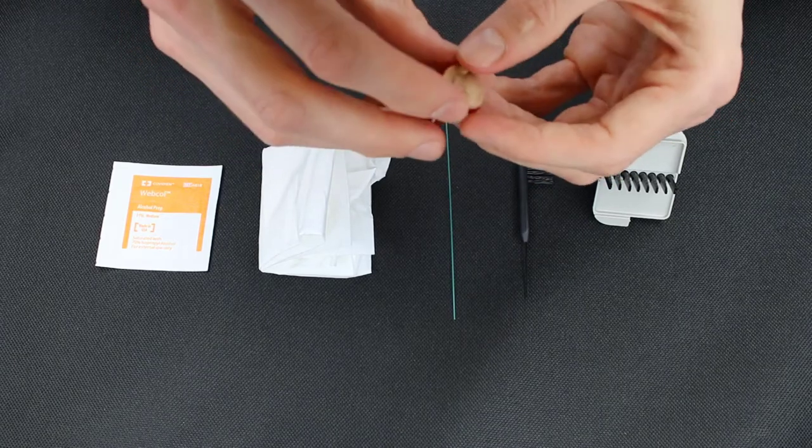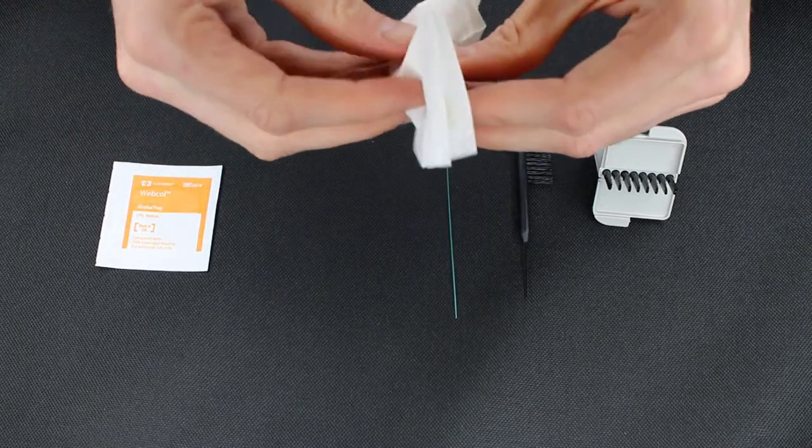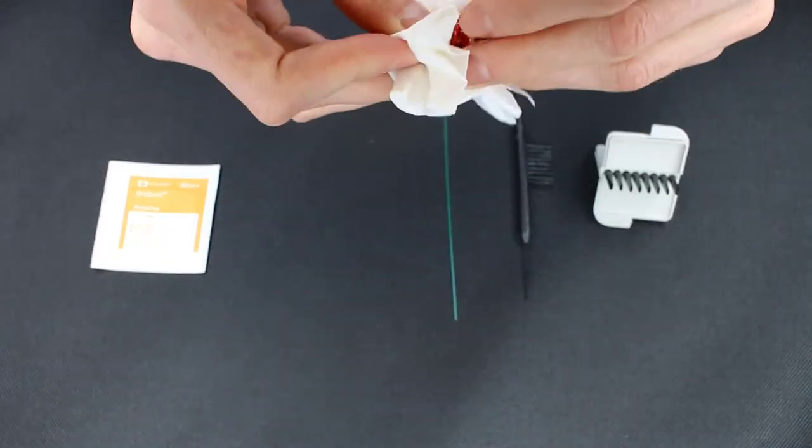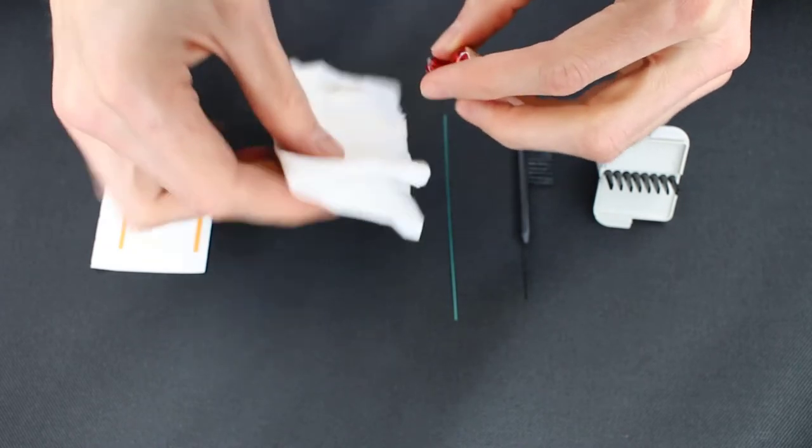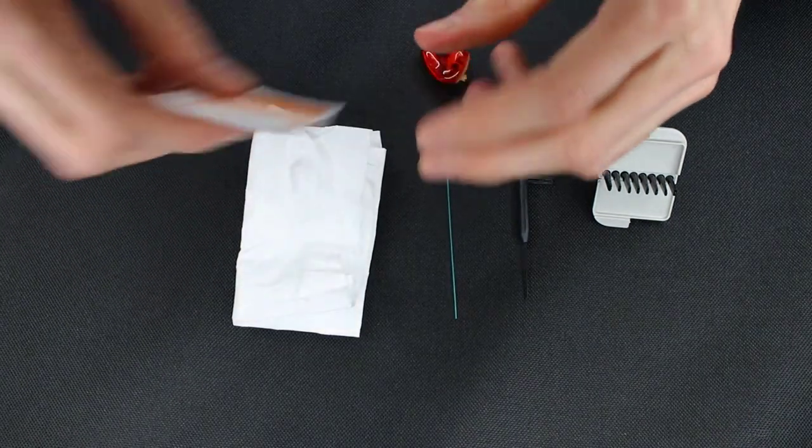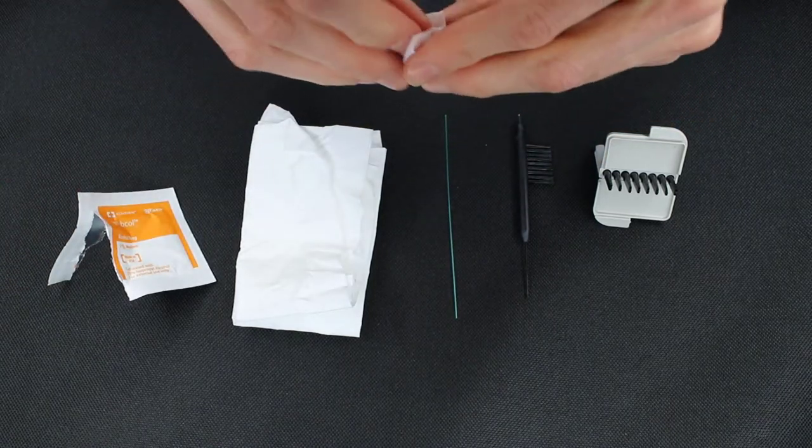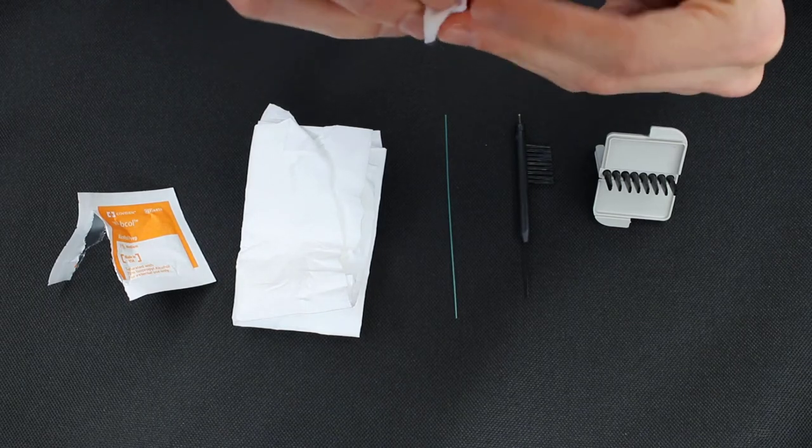So we're gonna start off at first, and we're gonna give the hearing aid a wipe down. Any type of earwax that would be on that hearing aid, we want to make sure that we get the big chunks of it off. And of course, if you are the type of person who likes to make sure that the hearing aid is disinfected, we would use an alcohol swab or alcohol pad and clean it off with that.